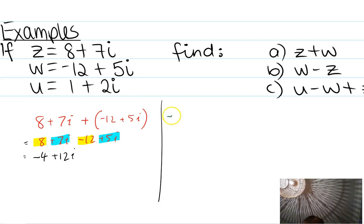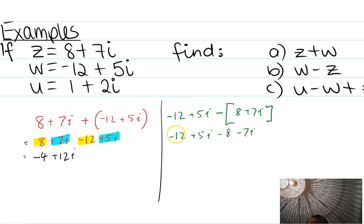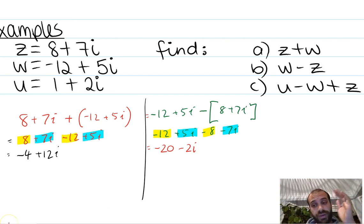So w minus z: negative 12 plus 5i minus, and there's z, 8 plus 7i. This is where the bracket matters a little bit, because that's the same as negative 12 plus 5i minus 8 minus 7i. Grouping real and imaginary components: negative 12 minus 8 is negative 20, and positive 5i minus 7i is negative 2i.